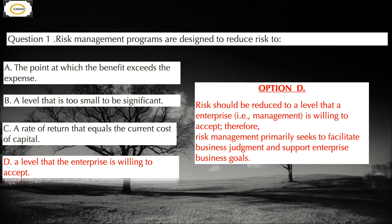Option B is also incorrect: reducing risk to a level too small to measure is not practical and is often cost prohibitive. Option C is incorrect as well: it is not practical to calculate the rate of return for each and every action and then compare that calculation with the current cost of capital.